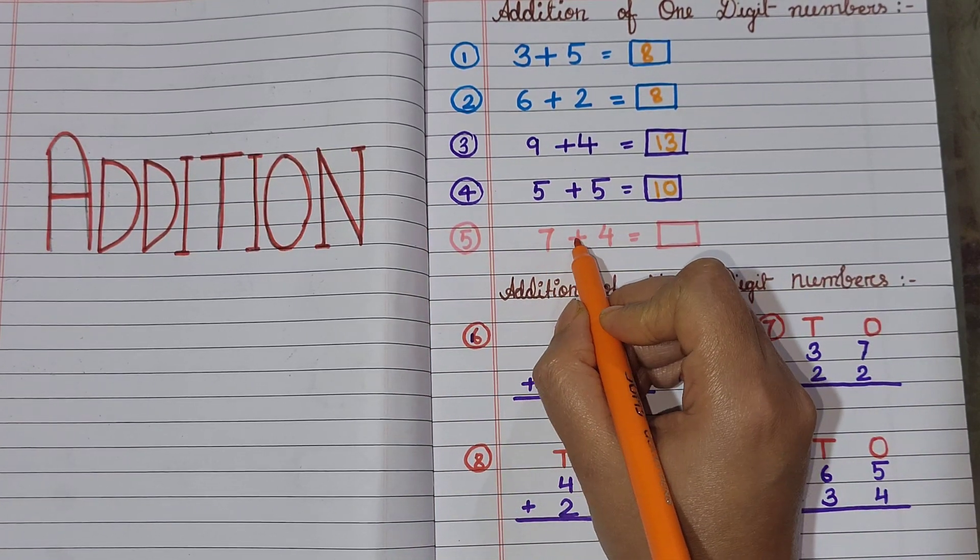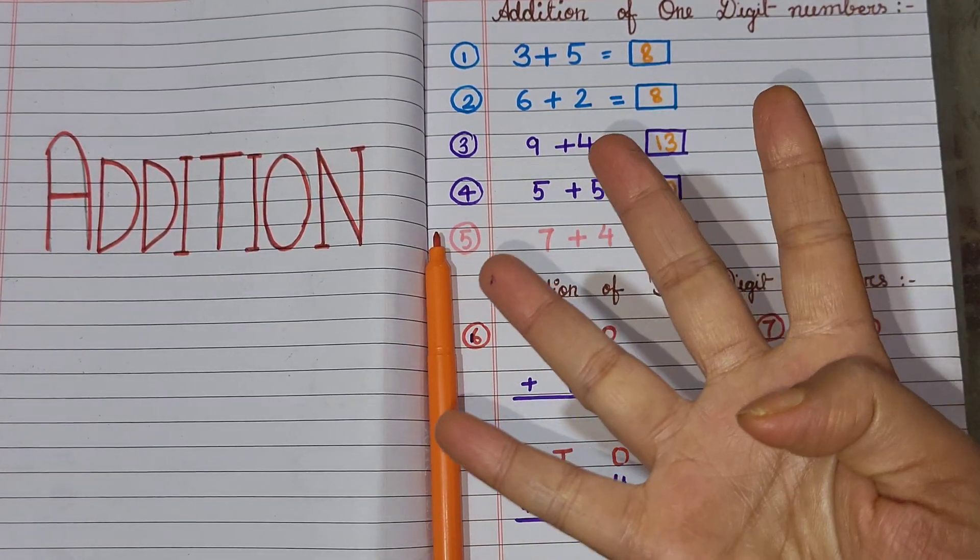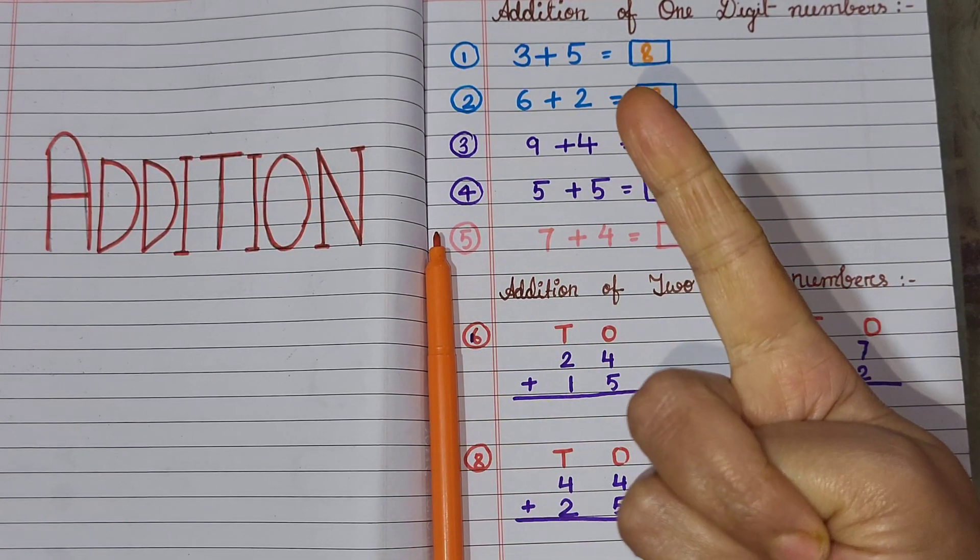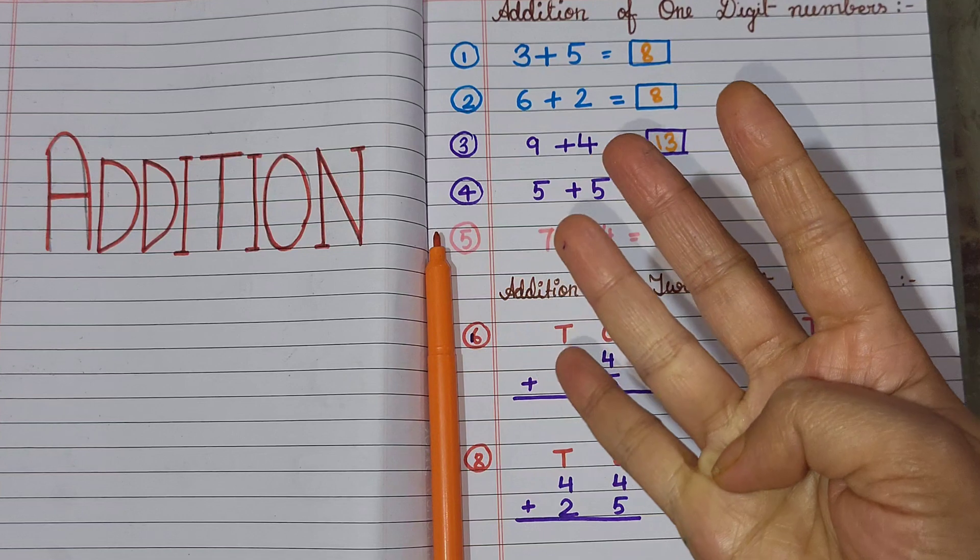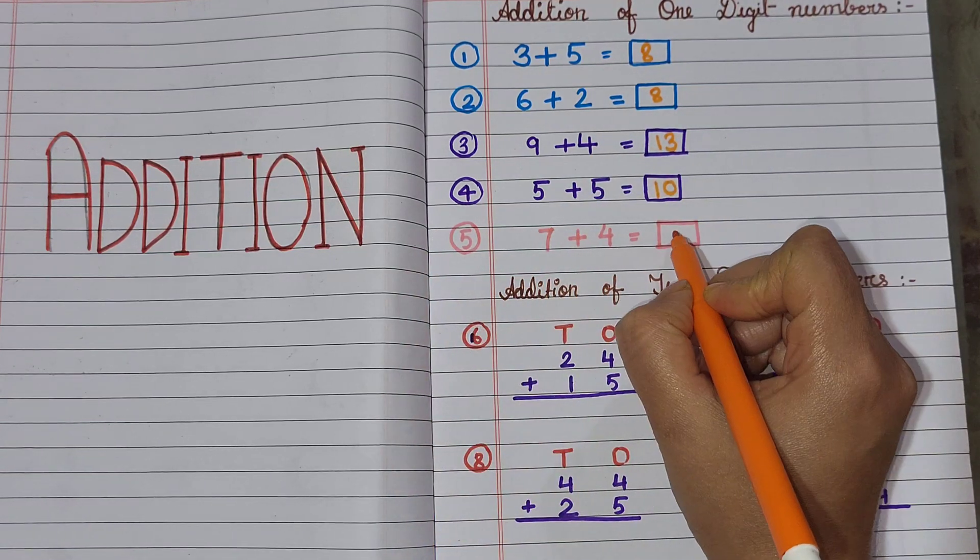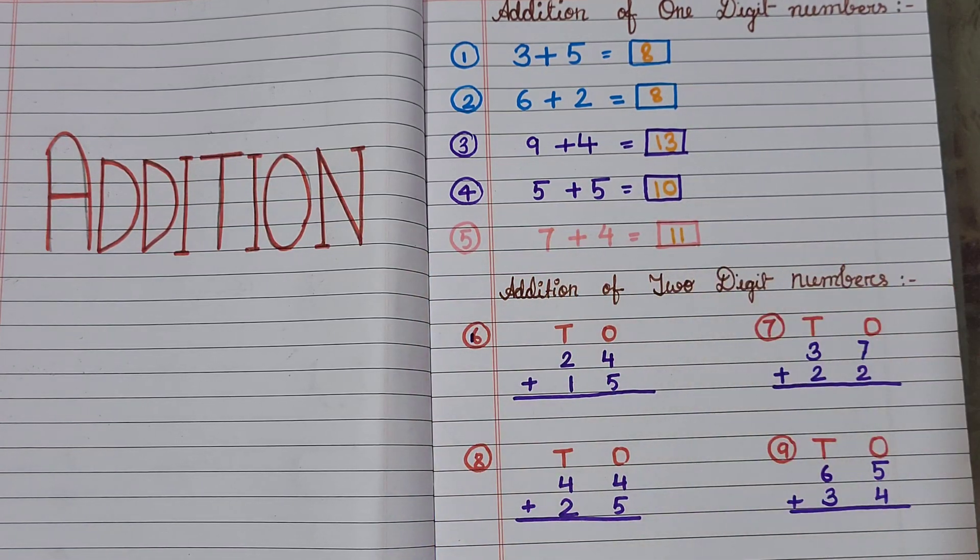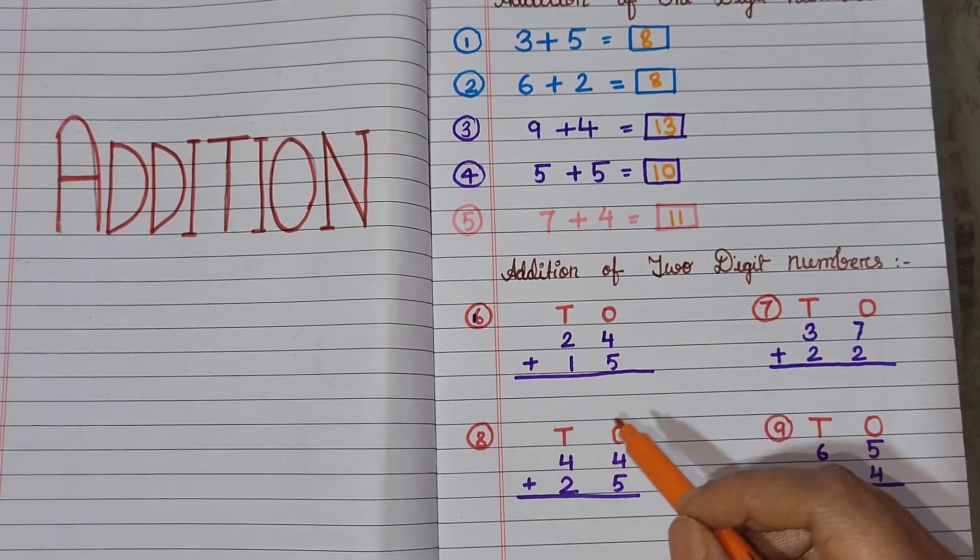Next, 7 plus 4. 7 in my mind, 4 fingers up. 8, 9, 10, 11. 7 plus 4 equals 11. Next is addition of two digit numbers.